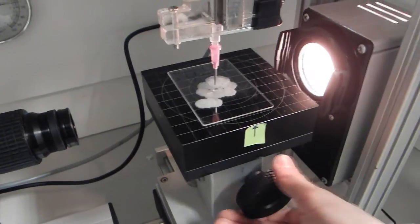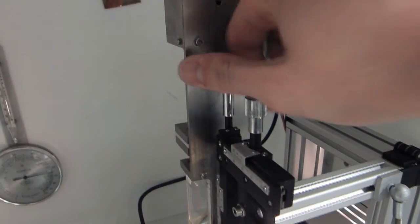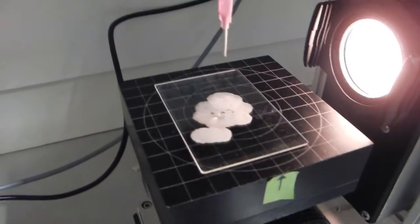When the measurement is complete, we wind the stage down and raise the syringe out of the way. The sample can then be removed from the stage.